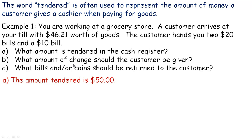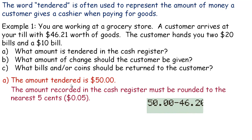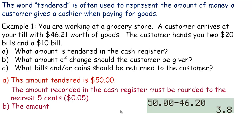Part B asks: what amount of change should the customer be given? The amount recorded in the cash register must be rounded to the nearest five cents. So $46.21 would be rounded down to $46.20 — since there are no pennies anymore, we round to the nearest five cents. The customer tendered $50, so we subtract $46.20 and get $3.80. That's how much change the customer should be given. The cash register won't tell the cashier what coins to give back, so you have to count that out yourself.